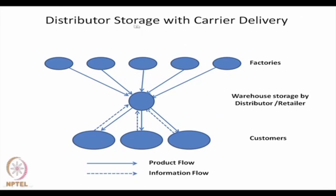The fourth option is distributor storage with carrier delivery. The distributor has a storage facility — a warehouse where the product is stored. As orders are received from customers, they are filled by shipping the materials through small packet carriers. Different factories of the manufacturer supply different components to the warehouse, and from the warehouse the supply is made to customers.